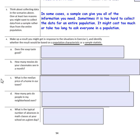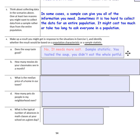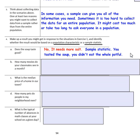Question 4: Make up a result you might get from the situations in Exercise 1 and identify whether it's based on a population characteristic or a sample statistic. Recall that a population characteristic is data about the whole group, while a sample statistic is data from a small part of the population. For Question A — 'Does the soup taste good?' — a result might be: 'No, it needs more salt.' This is a sample statistic because you tasted the soup, not the whole pot.